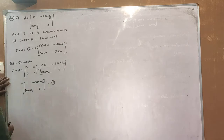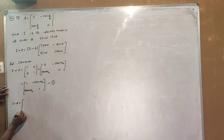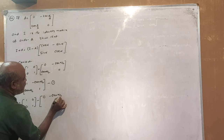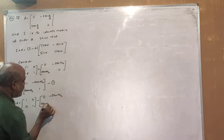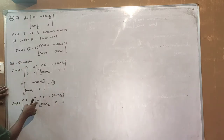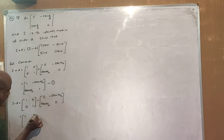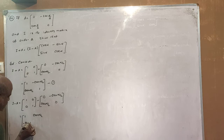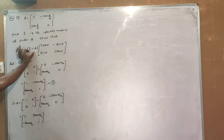Now I minus A: 1, 0, 0, 1 minus 0, minus tan(α/2), tan(α/2), 0. That gives 1 minus 0, 0 minus minus tan(α/2), 0 minus tan(α/2), 1 minus 0. So I minus A equals: 1, tan(α/2), minus tan(α/2), 1.